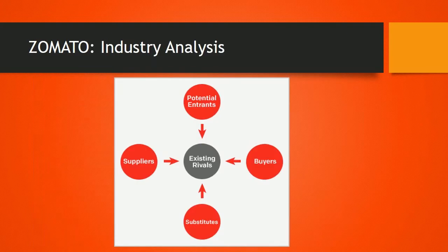Now let's have a look at the industry analysis of Zomato. First, the threat from potential entrants — for Zomato it is less, due to a loyal customer base which forms a rich network of foodies. Second, the threat of substitutes — Zomato services have a very limited number of substitutes, so this threat is moderate. Third, the bargaining power of suppliers is very low. The suppliers are firstly the tech service providers, and then the restaurants which share their data for free with Zomato. As there is too much competition amongst the suppliers, they don't possess much bargaining power.